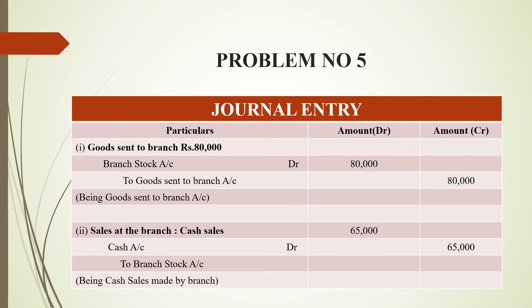Next transaction is sales at the branch — cash sales. Cash is coming inside and stock is going out. So cash account is debited and branch stock account is credited — debit what comes in, credit what goes out. Amount is 65,000. Narration: cash sales made by branch.